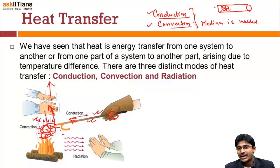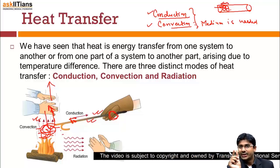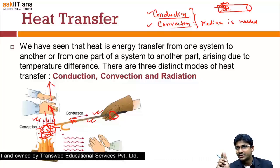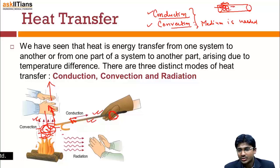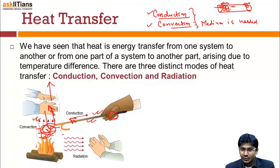In a rod, when heat is applied, the atoms gain energy and start vibrating. As they oscillate, they hit nearby atoms, causing those to oscillate as well, and this continues consecutively along the rod. This oscillation represents higher energy, which is actually the heat being transported. That is how conduction takes place at the atomic level.